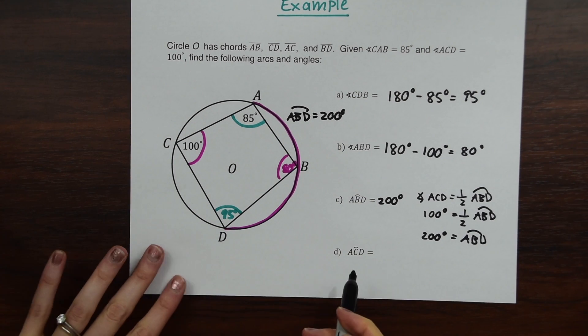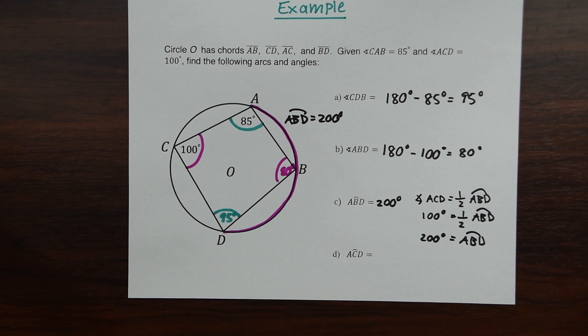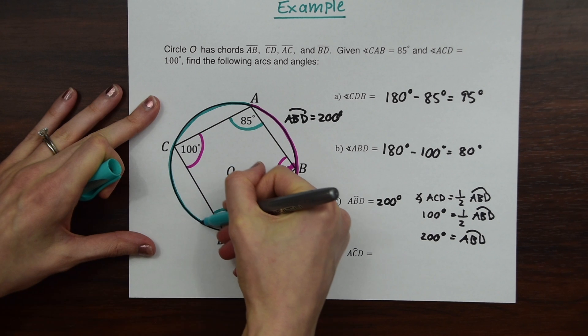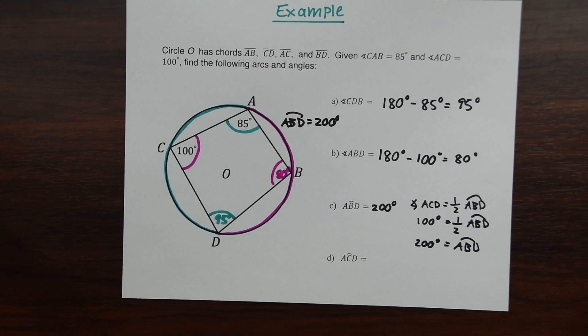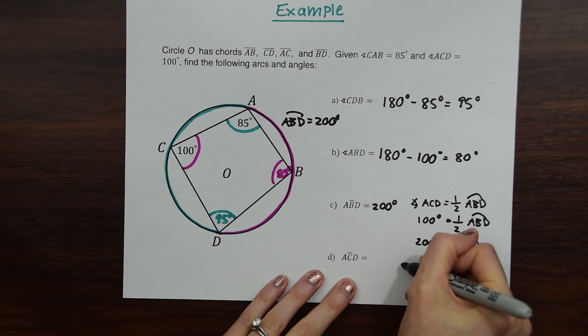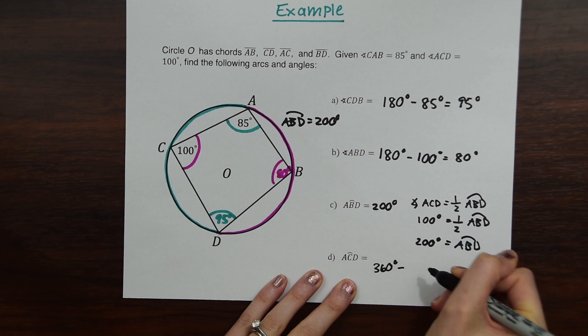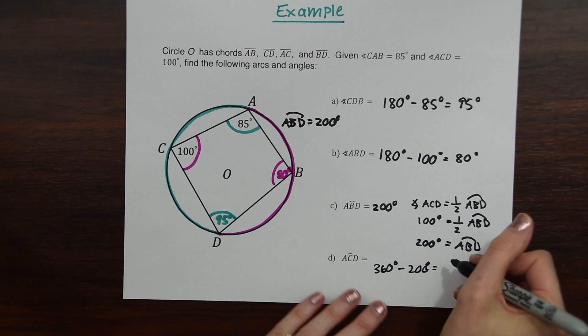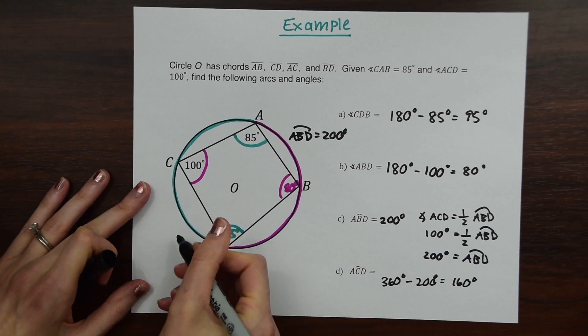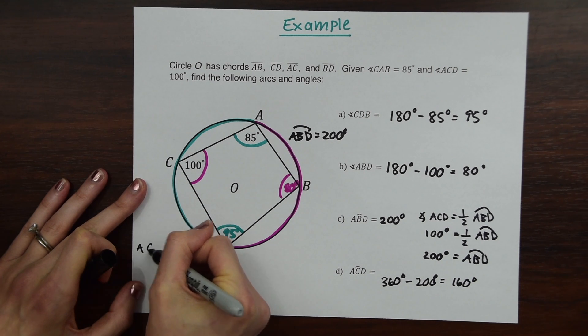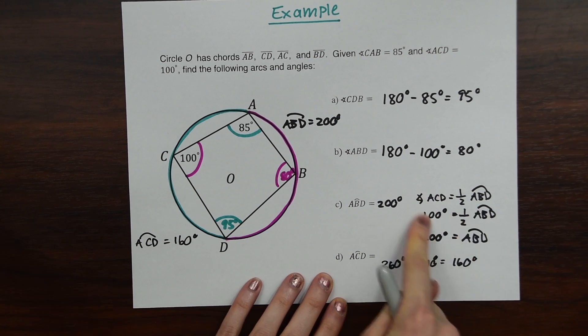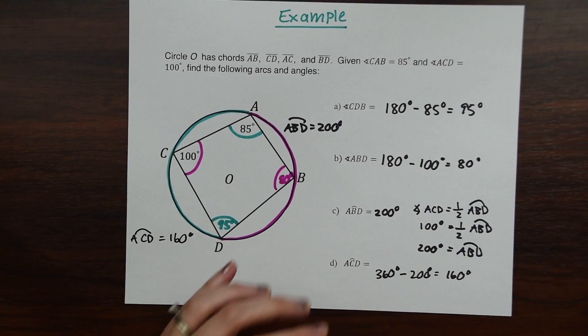So now for our last part of our question here, arc ACD. So now we're looking on the other side of our circle. So you can notice that this is the other half of the circle, right? So knowing that a circle has 360 degrees, we can easily just do 360 degrees minus 200, which is what the other part of the value of the circle is, which will give us 160. And we'll just write that over here. So arc ACD is equal to 160 degrees. And that's our answer. And another way you could find this is by using this formula, the inscribed angle formula, that would also work. And you'd get the same thing.